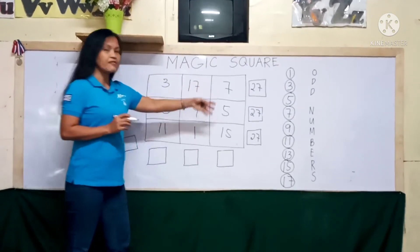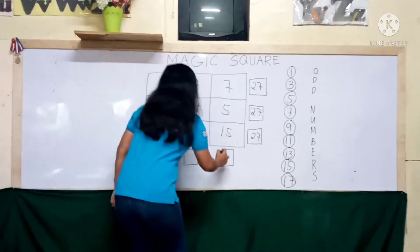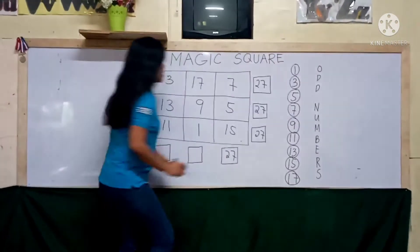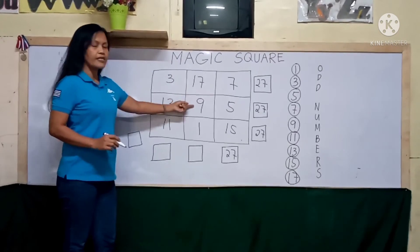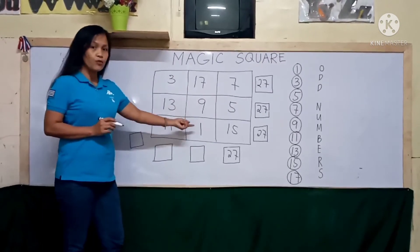Okay, 7 plus 5 is 12, plus 15, 27. 17 plus 9, 26, plus 1, 27.